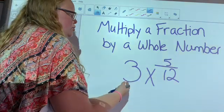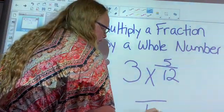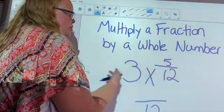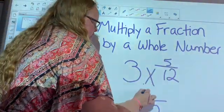So they're going to leave the denominator the same in the answer but multiply that whole number by the numerator. So 3 times 5 is 15.